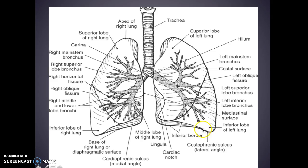This is your costophrenic angle or sulcus — I don't care what you call it. Your inferior borders are down here and your cardiac notch — there's a notch cut out of the lung for the heart. Your lingula is here, and you have your cardiophrenic angle. You have your right middle and lower — lower, middle, superior bronchus — and your superior lobe of your right lung. This is the apex up top.